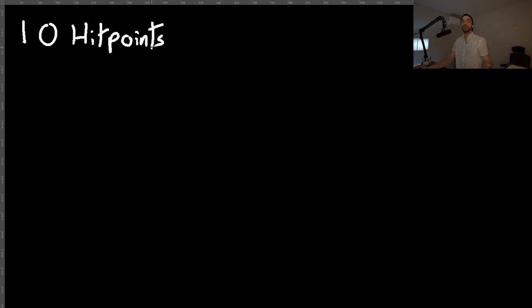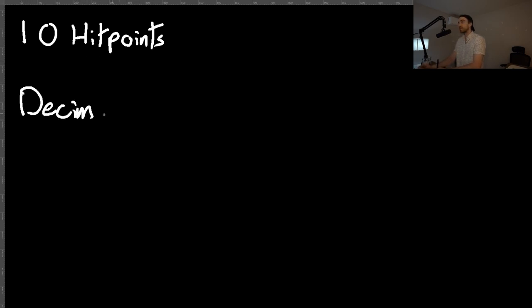Let's get started. We're going to try and represent a simple number first. For example, we've got 10 hit points. How do we write 10 hit points? Well, in the format we're all used to in our daily life — the decimal format — 10 hit points is represented as a one and a zero. Simple enough.